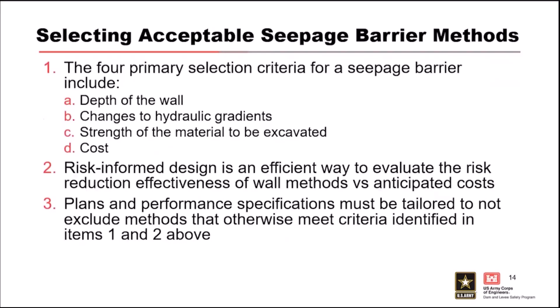How do you select the most appropriate method? There are some general key considerations: the depth of the wall, what the groundwater flow conditions are, what's the strength of the material, and cost. If you're not dealing with hard rock, risk-informed design is highly recommended. Keep in mind that seepage barrier design is generally a performance specification — the contractor's means and methods are going to drive aspects of the design, so we don't want to overly box them in. If multiple methods will work, don't restrict otherwise acceptable methods, and have the contract structured so you're not putting otherwise qualified contractors at a disadvantage.